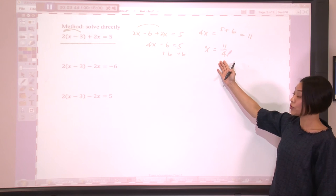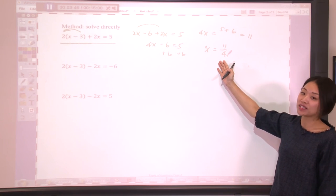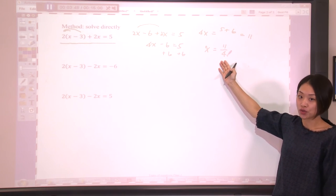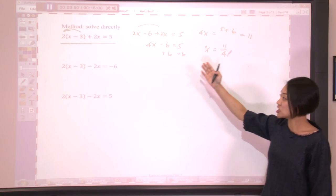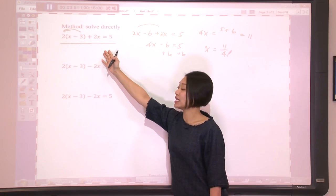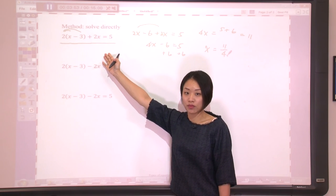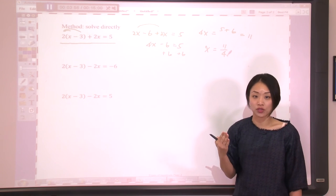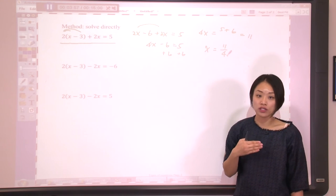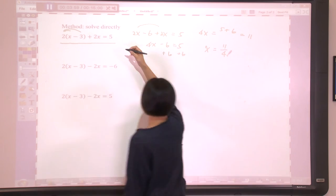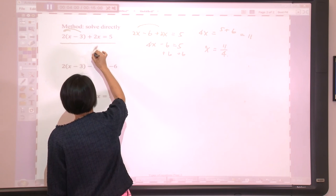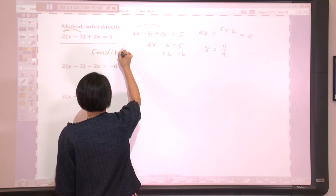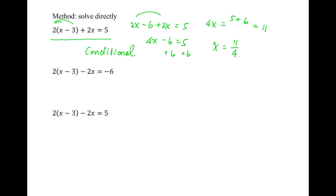Here, we do find a solution. So once we can find one solution, or maybe two solutions, this equation is a conditional equation, because it is true for some values but false for the rest. So the conclusion is this one is a conditional equation.